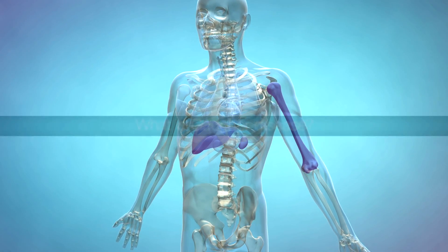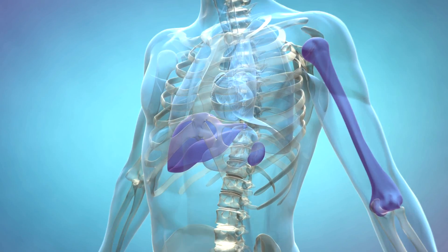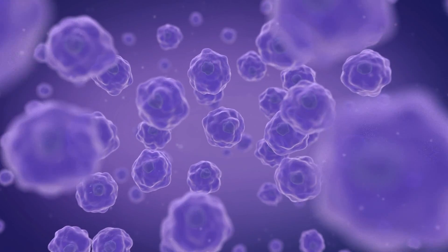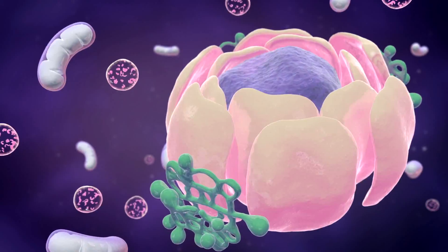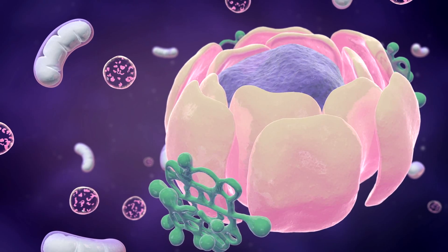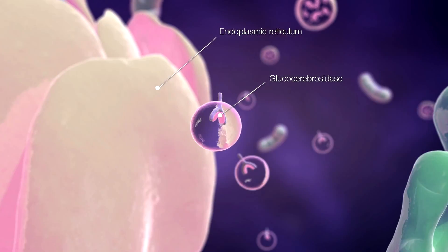Gaucher disease is the most common of the lysosomal storage diseases. It's a rare inherited disorder resulting from a deficiency of the lysosomal enzyme glucocerebrosidase.